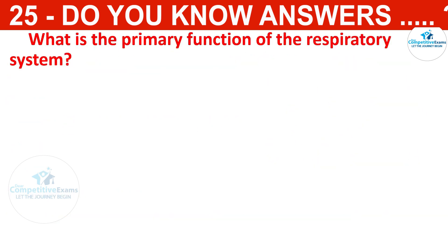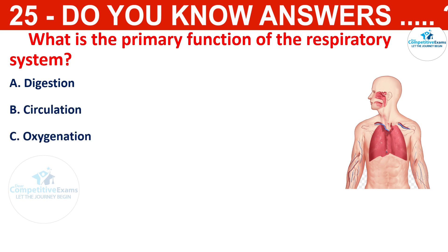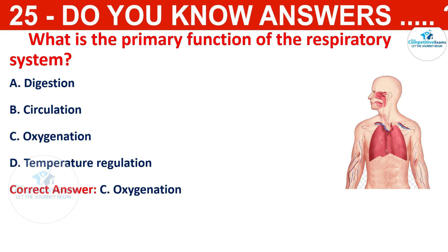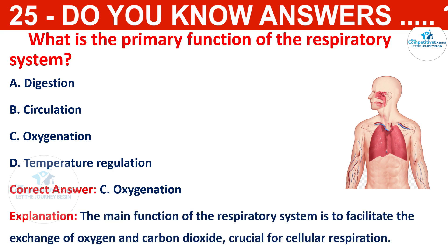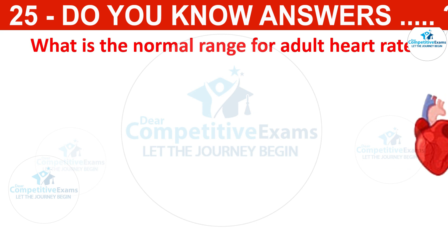What is the primary function of the respiratory system? The options are digestion, circulation, oxygenation, or temperature regulation. The correct answer is oxygenation. The main function of the respiratory system is to facilitate the exchange of oxygen and carbon dioxide, crucial for cellular respiration.